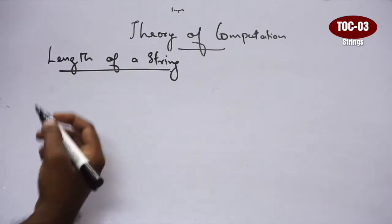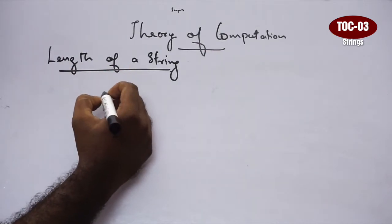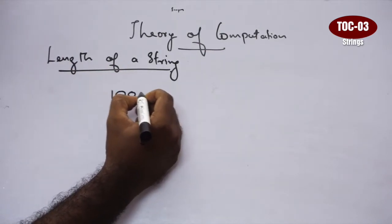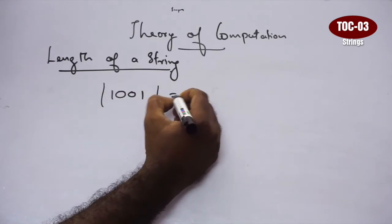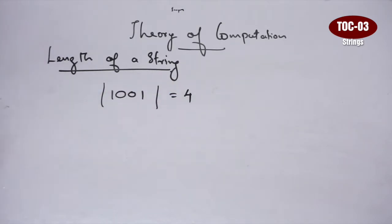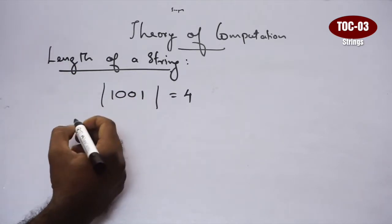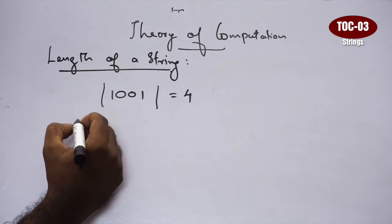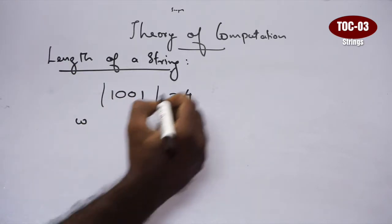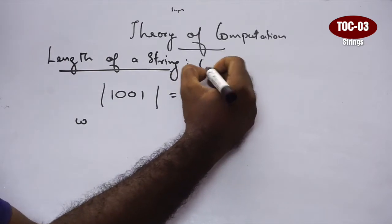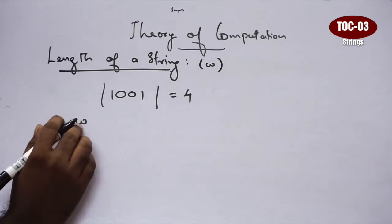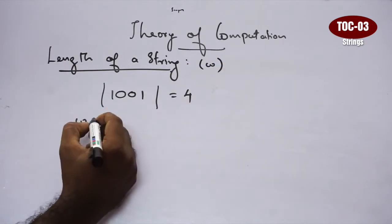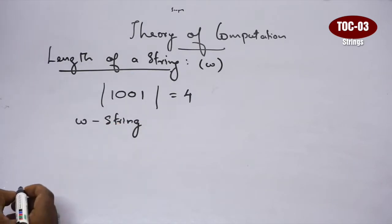If we look at the length notation, we will see a sample: 1, 2, 3, 4 — so a string of length 4. Generally, string and word, if we use notation, it is the small letter w. So small w is the notation for string.